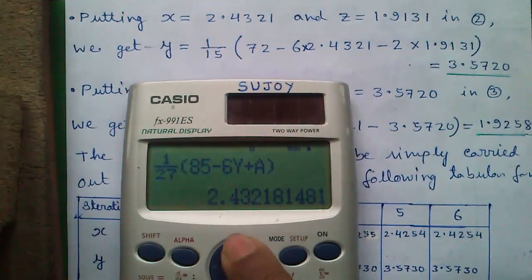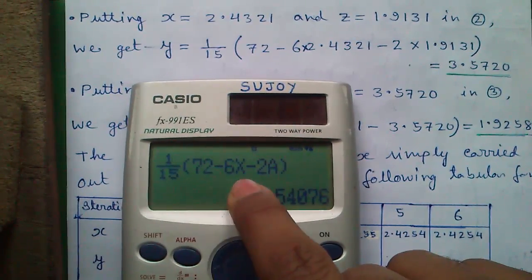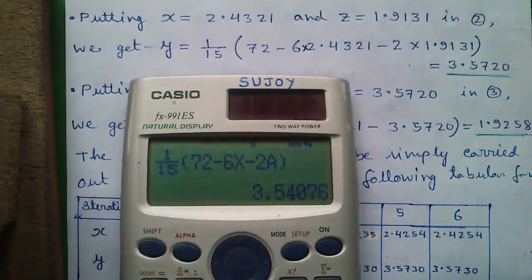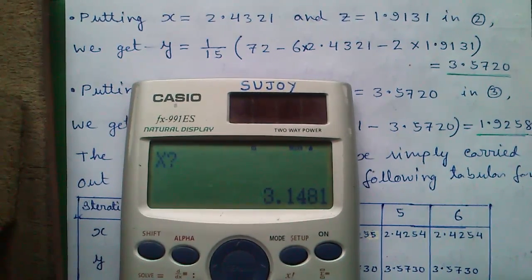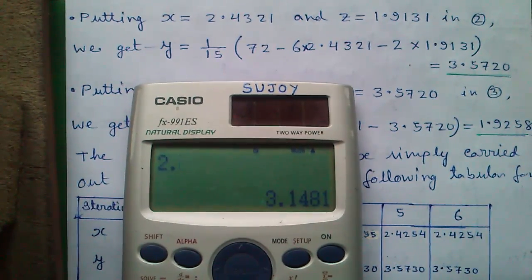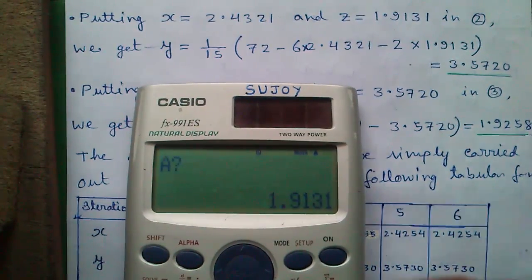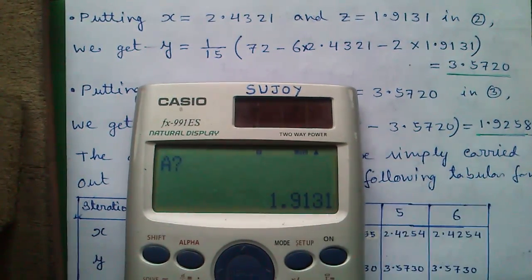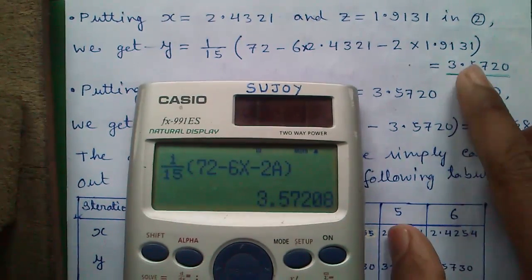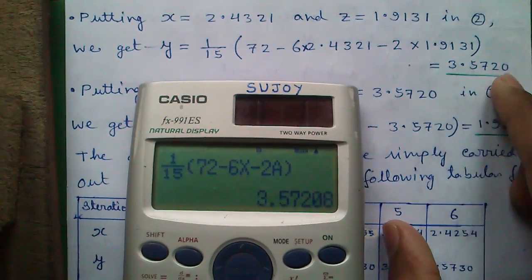Similarly for y find the expression 1 by 15, press calc. And x is 2.4321, press equals, and z is 1.9131, press equals. So y is 3.5720.